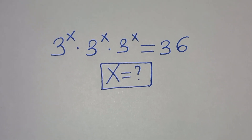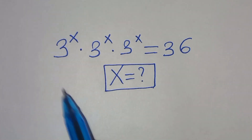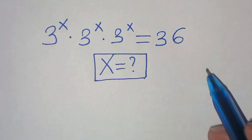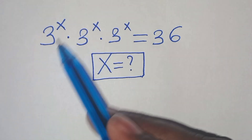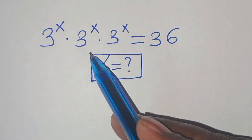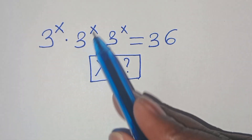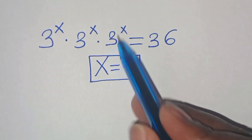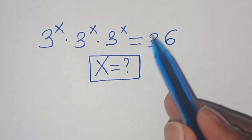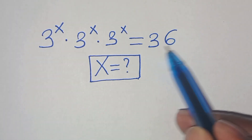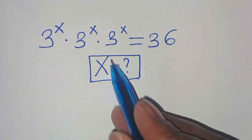Hello everyone, you're welcome to solve this nice exponential equation: 3 to the power of x, times 3 to the power of x, times 3 to the power of x, equals 36. What is the value of x?